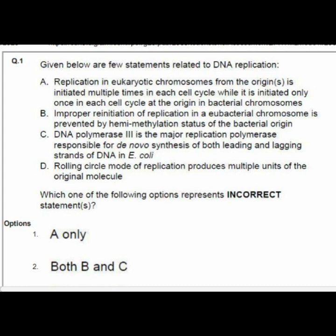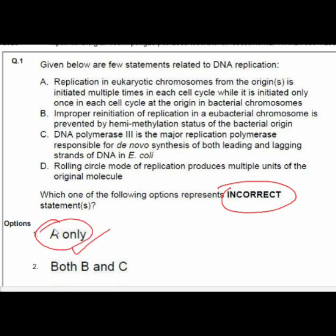The first question gives statements related to DNA replication, asking us to identify the incorrect statement. Option A states that replication in eukaryotic chromosomes is initiated multiple times in each cell cycle, while it is initiated only once per cell cycle at the origin in bacterial chromosomes. This statement is incorrect, so option number one is the correct answer.